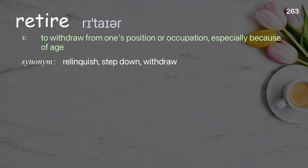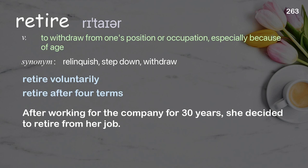Retire: to withdraw from one's position or occupation, especially because of age. Examples: retire voluntarily; retire after four terms. After working for the company for 30 years, she decided to retire from her job.